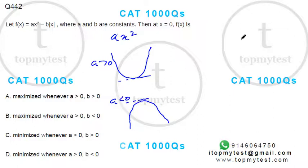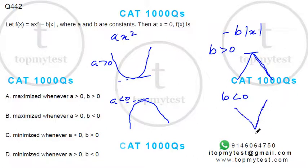Now if you look at minus b modulus of x—minus b|x|—if b is greater than 0, then it will be looking something like this. And when b is less than 0, it will look something like this for minus b|x|.